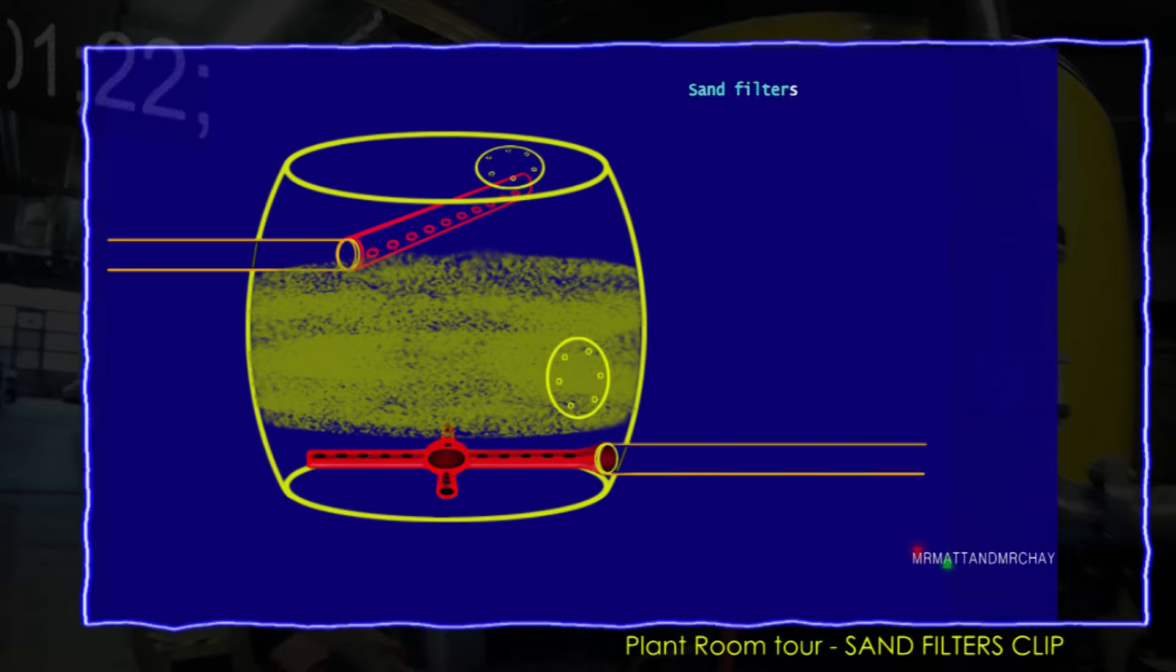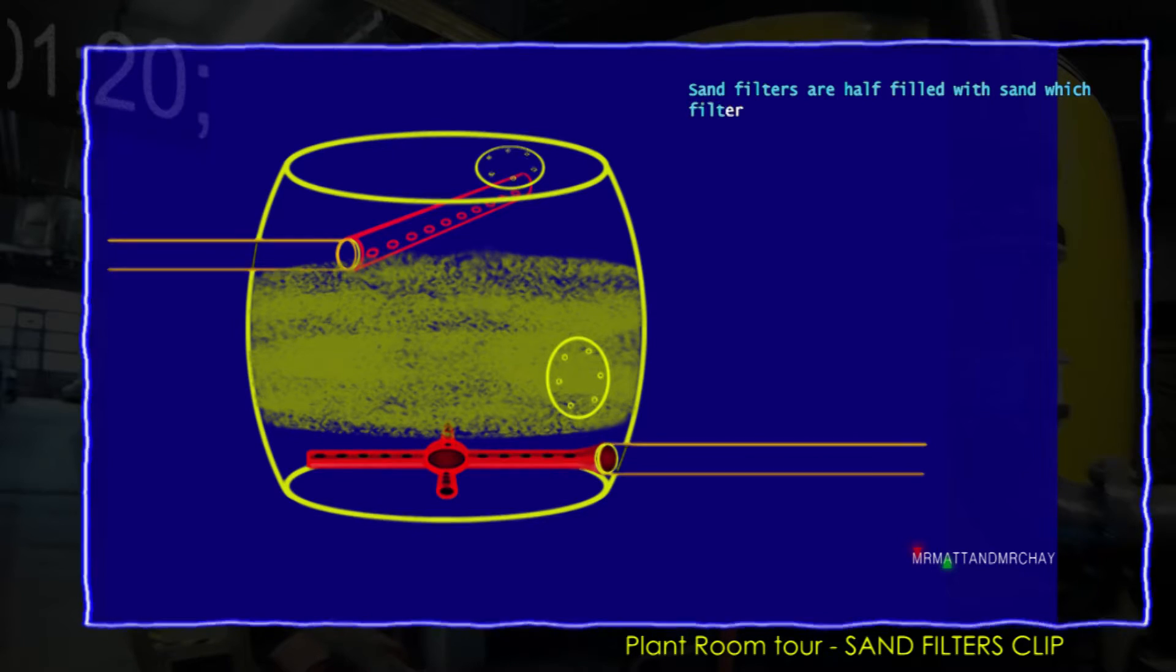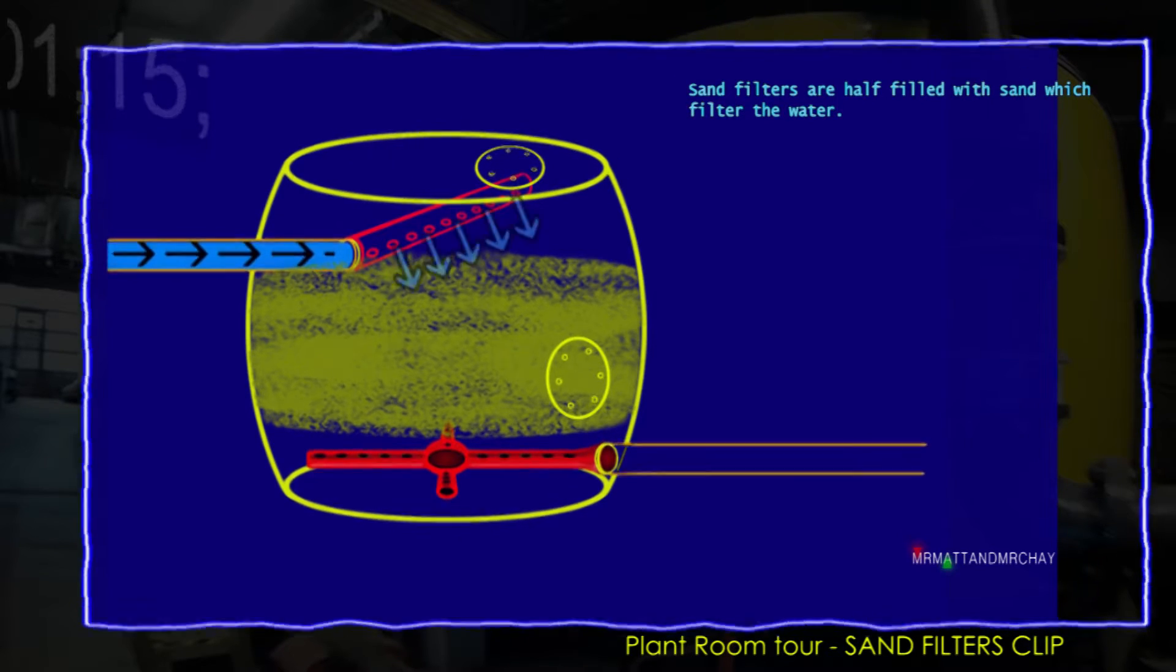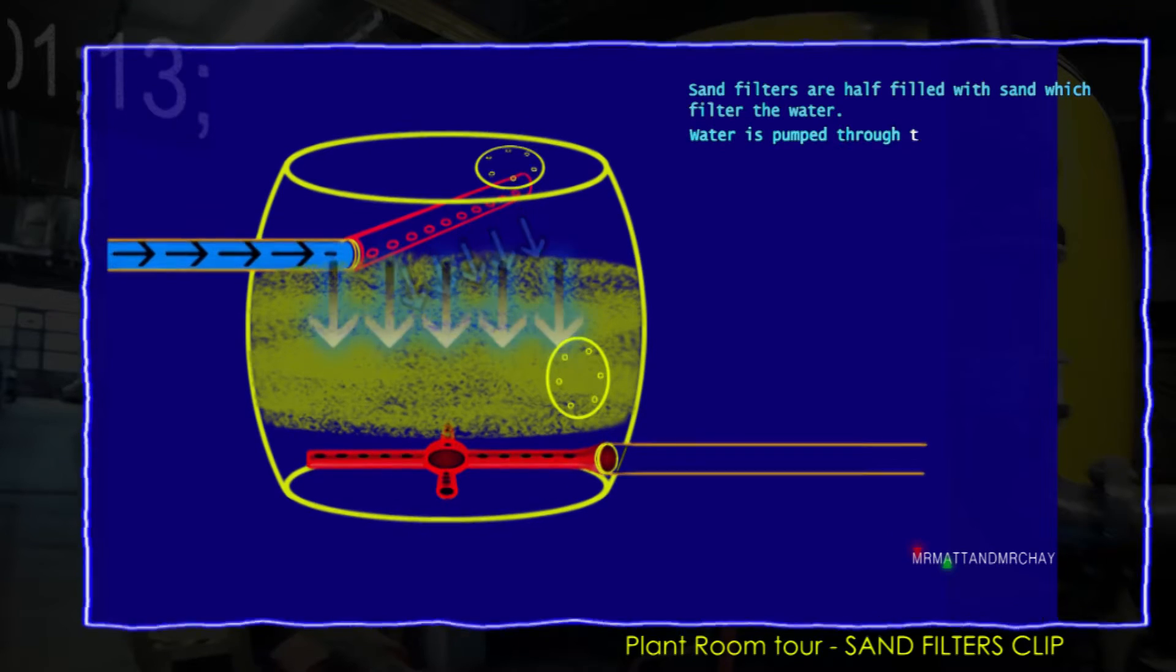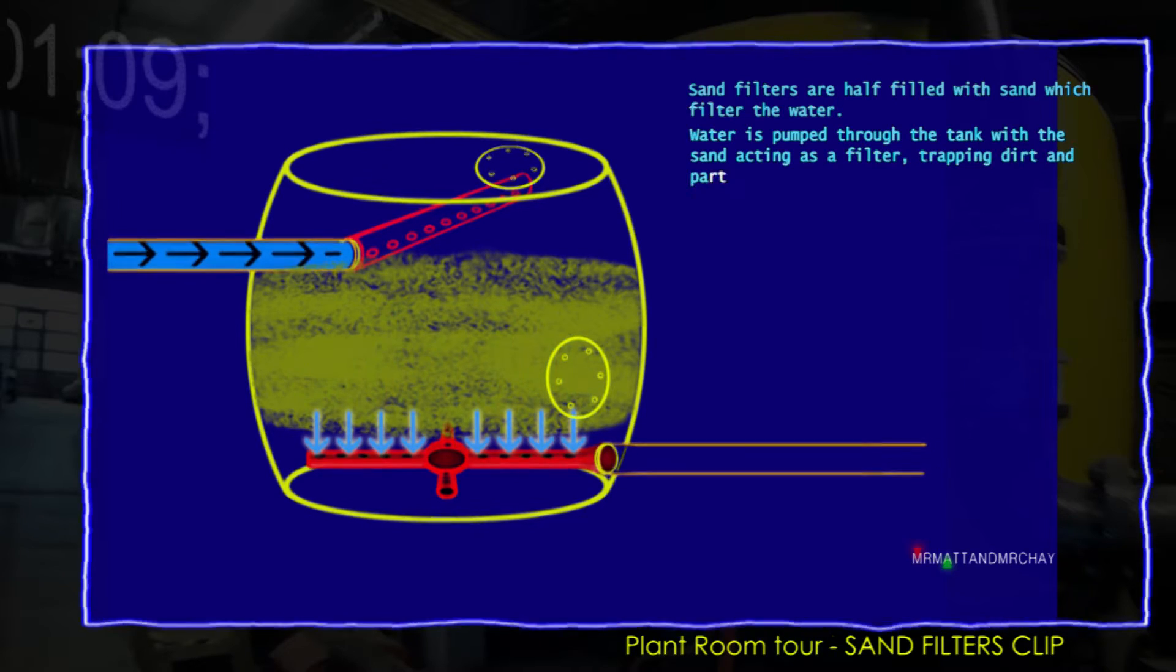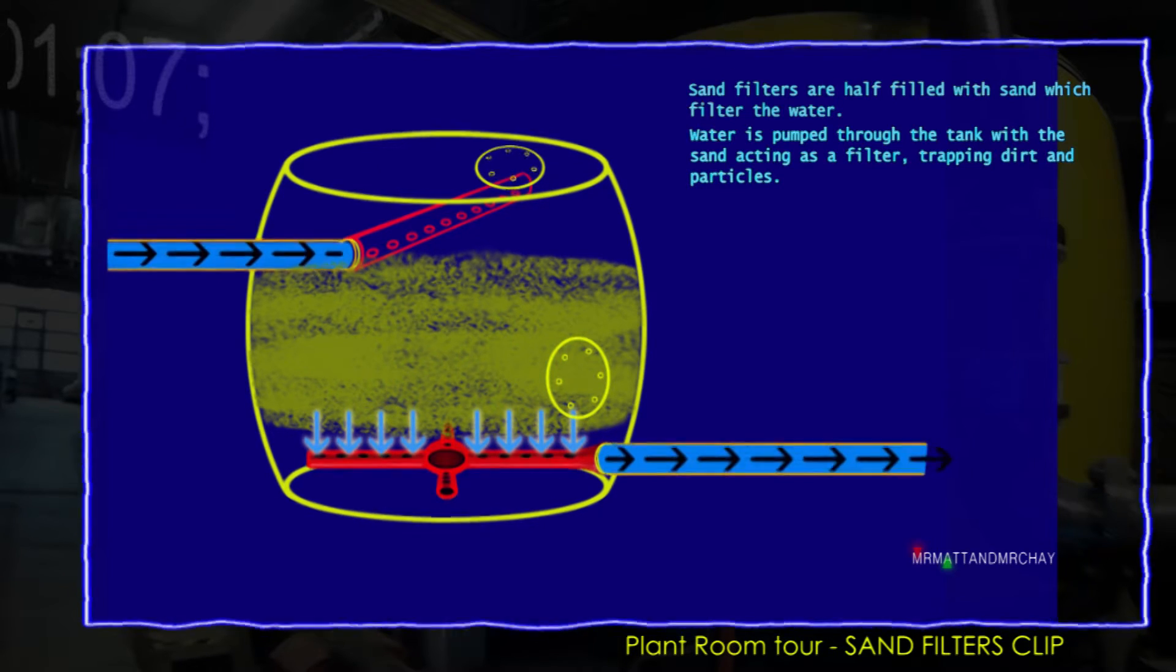Sand filters are half filled with sand which also acts as a filter, collecting muck, dirty particles, and other you-know-whats out of the water. Water is pumped into the top of the tank, filters through the sand, and leaves the bottom through laterals which allow water but not sand to pass.